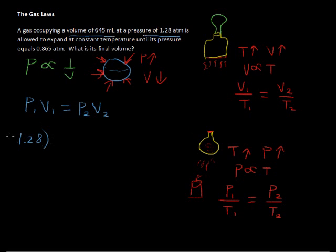So we have, we're just going to plug this in, we have the pressure, the initial pressure, that's P sub 1, and the initial volume, V sub 1, and that is given in 645 milliliters.